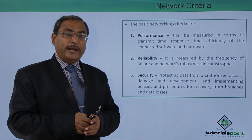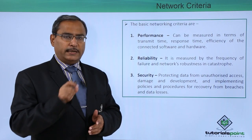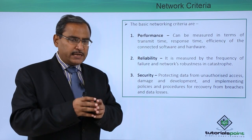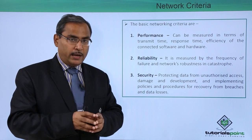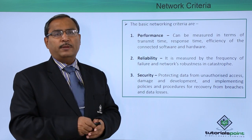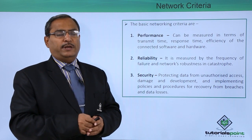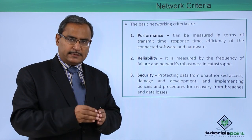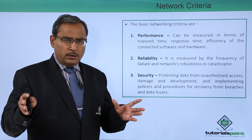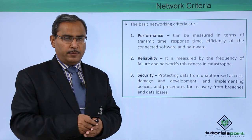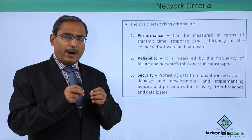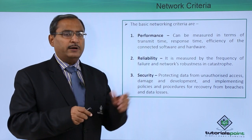Another metric is Mean Time To Repair (MTTR) — how much average time we require to repair one node which has some problem. If MTTR is less and MTBF is long, the system is more reliable. Also, that system should be robust in a catastrophe.